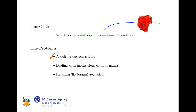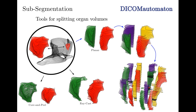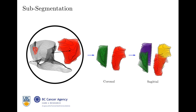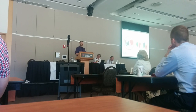The next two points are related. Dealing with inconsistent contour names and handling 3D organ geometry are important if you're going through 100 patients. I wrote a piece of software called Dicomatomaton that can slice and dice these organ contours, chop them up, and then chop those up. It's composable, works wonders, can do dosimetric calculations, and deal with contour naming schemes. For the purposes of this study, we're going to split the parotid along a coronal plane and then split that along a sagittal plane, giving us quadrants — salivary glands in quadrants.